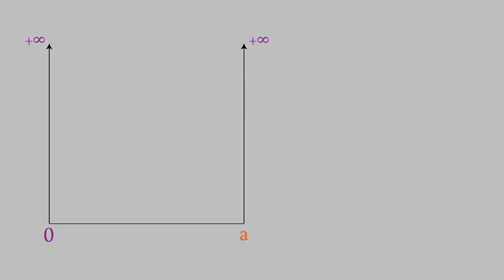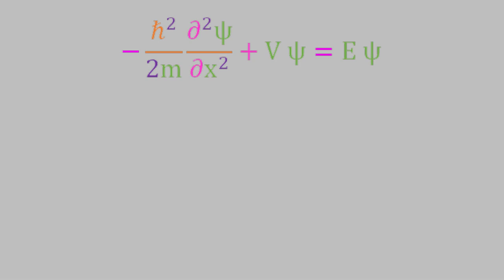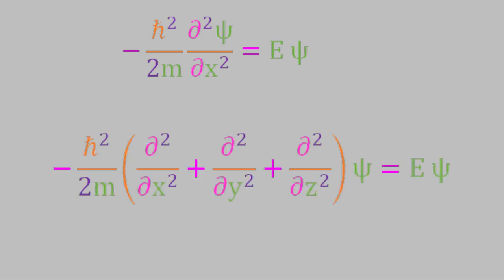Let's make our particle-in-a-box model a little more realistic. So far we've only been looking at a one-dimensional system, but most real systems are going to be three-dimensional. Let's imagine a three-dimensional box: just like the one-dimensional version, the potential energy is 0 inside the box so the system can move freely, but at the walls the potential energy becomes infinite so the system can't move out. The Schrödinger equation for the three-dimensional system is fairly similar to the one-dimensional case, with the only difference being that we have three second-derivative terms, one for each dimension.